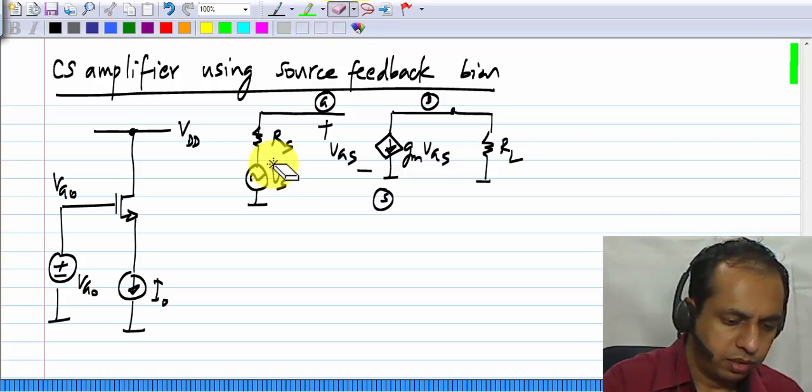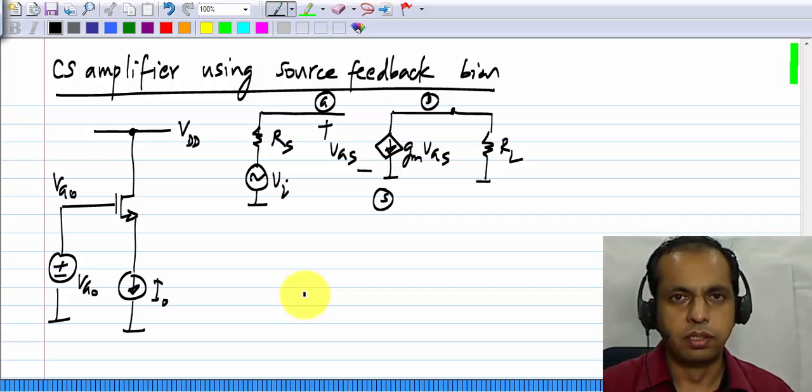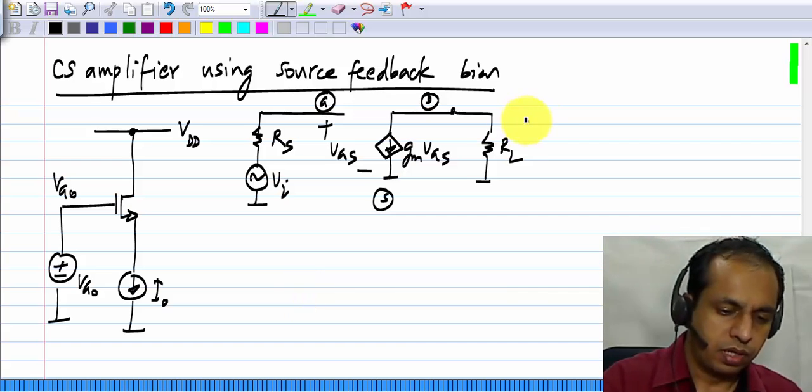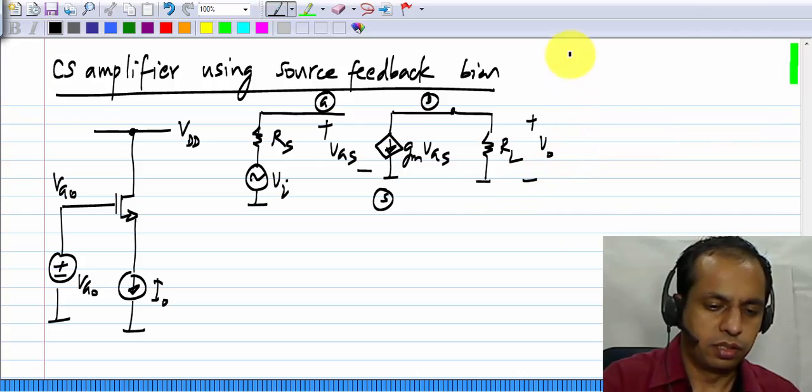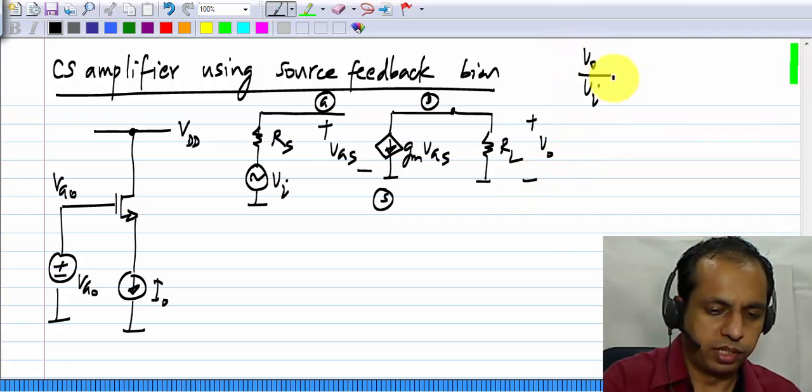Let me change the notation for the input, let me call this Vi for the input signal. And the output appears between here, and this amplifier provides a gain of minus gm RL.